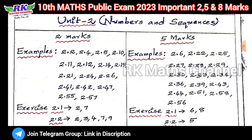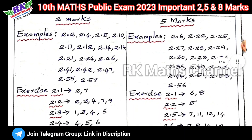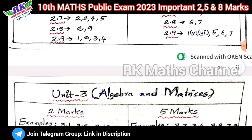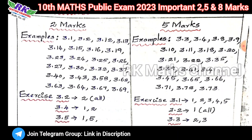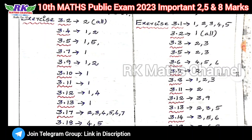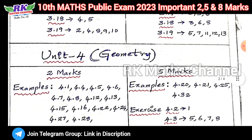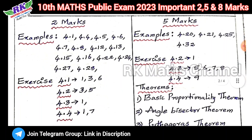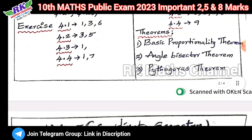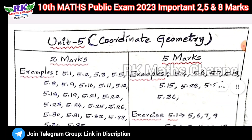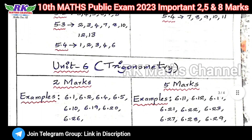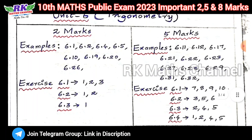Let's take the first chapter. This covers the third and fourth chapters — geometry. Now the geometry theorem, including the Basic Proportionality theorem and Pythagoras theorem. These are the five questions in the first section. Next is the fifth unit: Coordinate Geometry — other important questions.